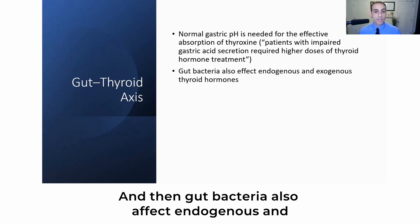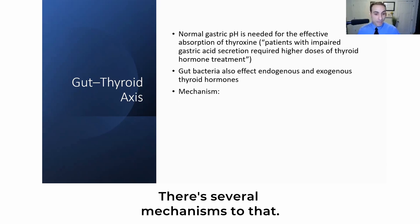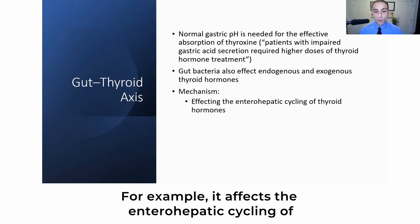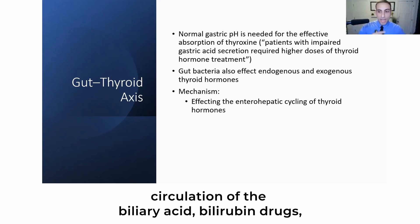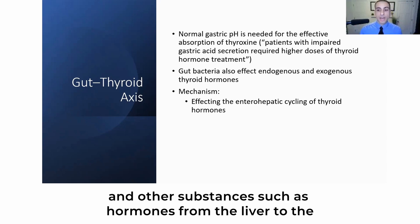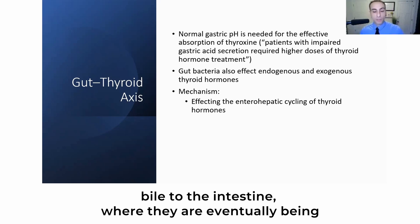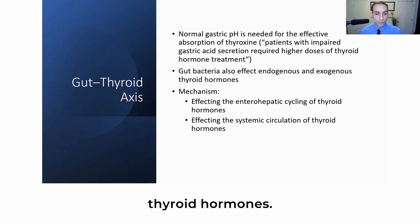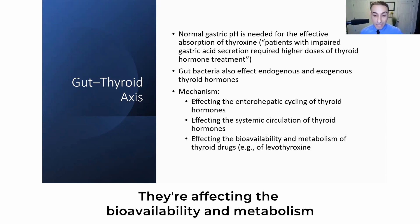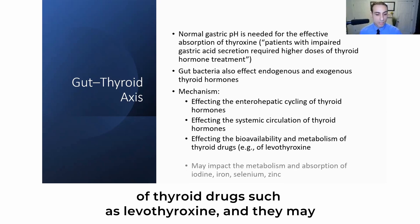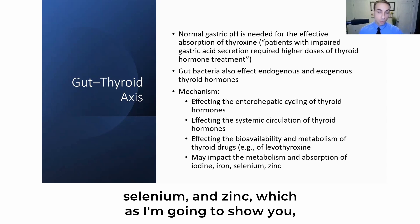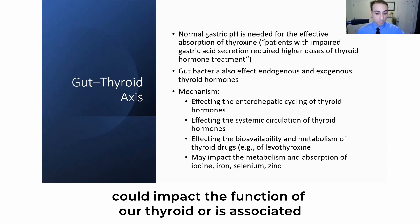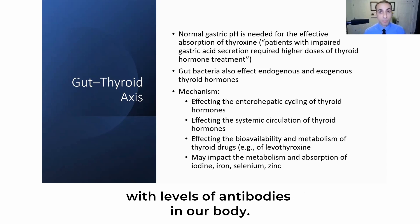Gut bacteria also affect endogenous and exogenous thyroid hormones through several mechanisms. For example, they affect the enterohepatic cycling of thyroid hormones — the circulation of biliary acids, bilirubin, drugs, and hormones from the liver to the bile to the intestine, where they are eventually eliminated. They affect the systemic circulation of thyroid hormones, the bioavailability and metabolism of thyroid drugs such as levothyroxine, and may impact the metabolism and absorption of iodine, iron, selenium, and zinc, which can impact thyroid function or is associated with antibody levels.